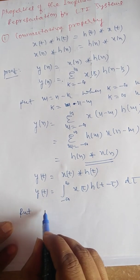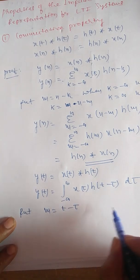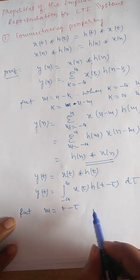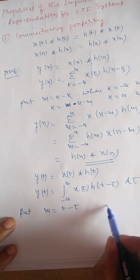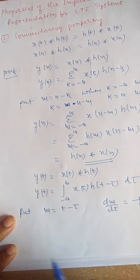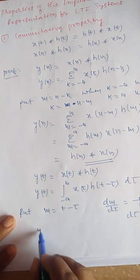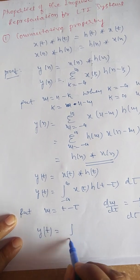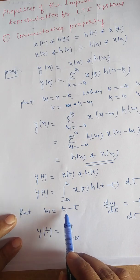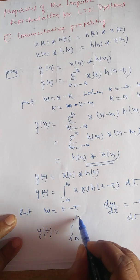Now, put m equal to t minus τ. Differentiating with respect to m, we get dm/dτ equals minus 1, so dτ equals minus dm. We can write y(t) as the integral where when τ is minus infinity, m becomes plus infinity, and when τ is plus infinity, m becomes minus infinity.